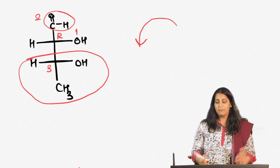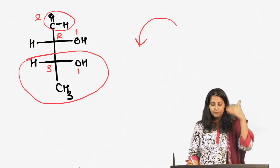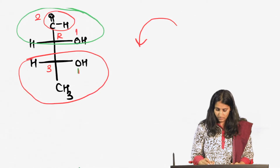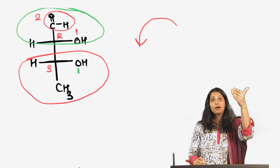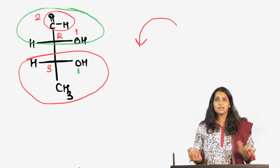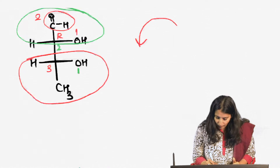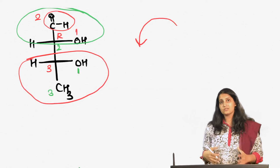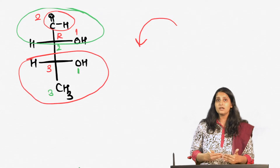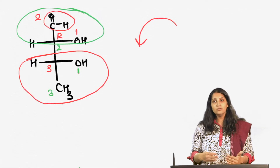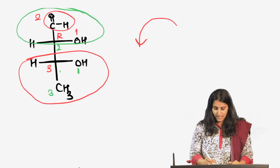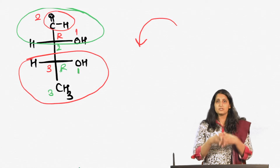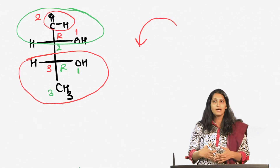For the bottom stereocenter, applying the same rules: the oxygen gets first priority. The top carbon is attached to an oxygen whereas the bottom methyl is attached to all three hydrogens, so the top carbon gets second priority and methyl gets third priority. This also looks like S, but remember the least priority group — hydrogen — is coming towards you, so again it looks like S but it is actually R. That is how we assign the Fischer projection stereocenters as R and S.